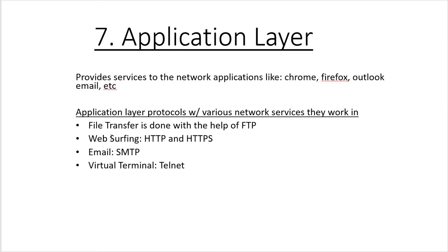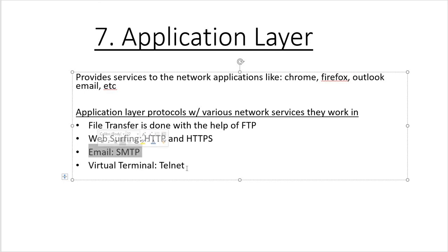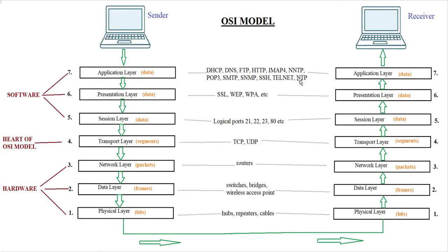The Application layer provides services to network applications like Chrome, Firefox, Outlook, and email. There are many application layer protocols: FTP is used for file transfer, HTTP is used for web surfing, SMTP is used for emails, and Telnet is used for virtual terminal. Looking at the diagram, you can see various Layer 7 protocols — DHCP, DNS, FTP, HTTP, IMAP4, NNTP, and more.